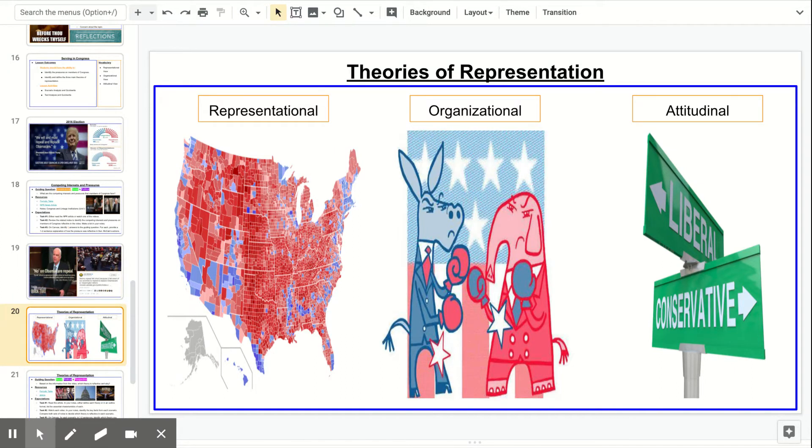There's this representational view, which basically says members of Congress will vote or act in a certain manner while a piece of legislation is going through by taking into account what their constituents are doing. So that's why I put this picture up here to hopefully help you remember this. This is the district map from the 2016 election. And you can see a lot of red in the middle and blue on the sides, right?